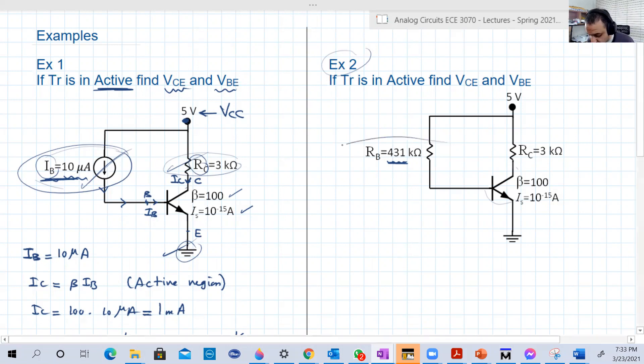Now we replace this current source with a resistor here, more than 400 kilo ohms. And why is it so big? Because basically IB is usually very small. So to design a circuit without a current source, because the current source is really complicated, it's not that easy to make a current source, we replace usually the current source with very big resistors. So let's now try to solve this circuit.